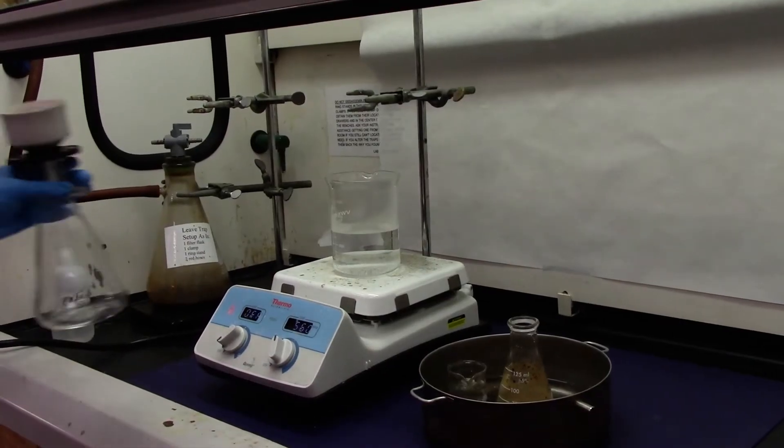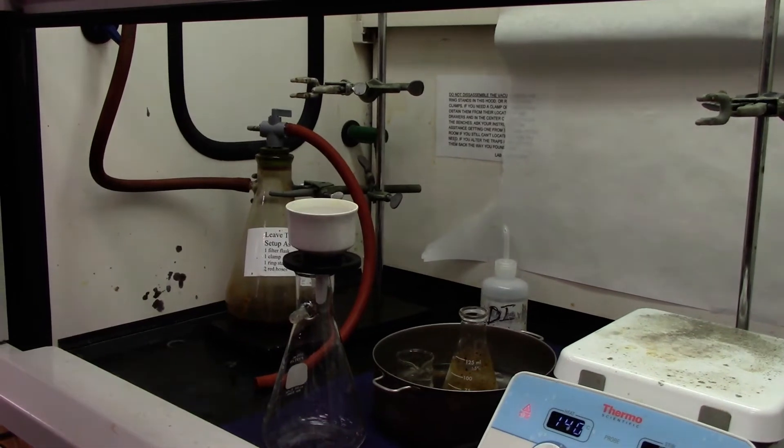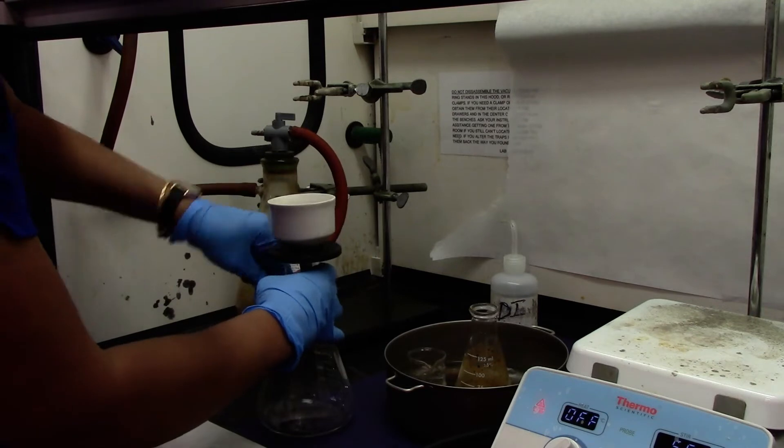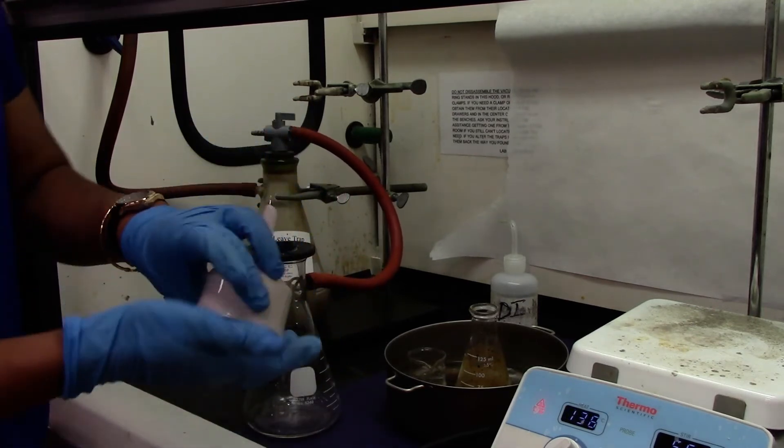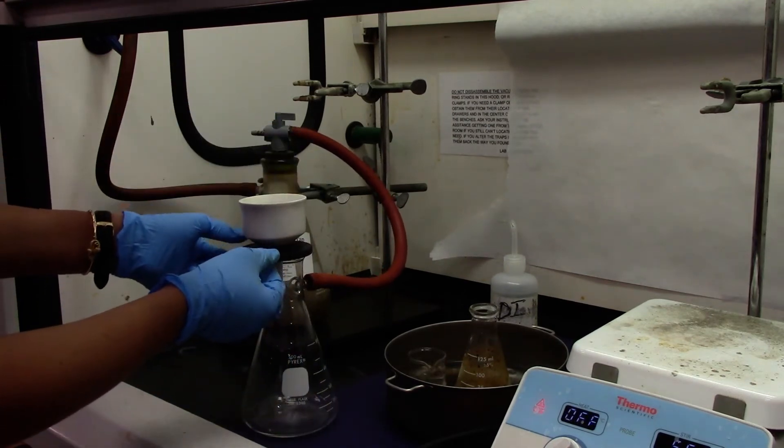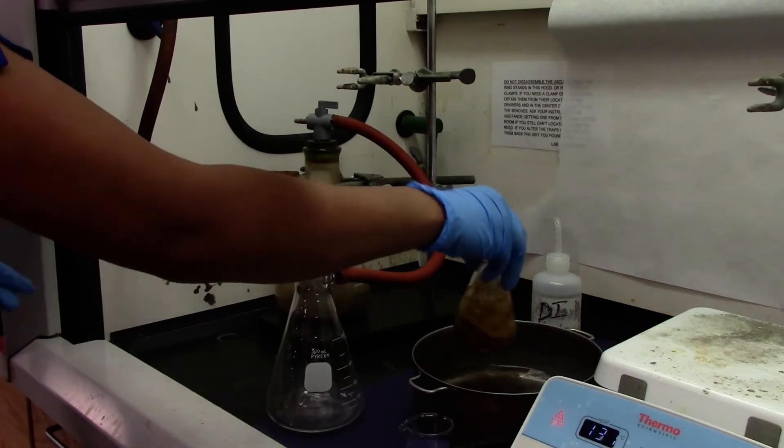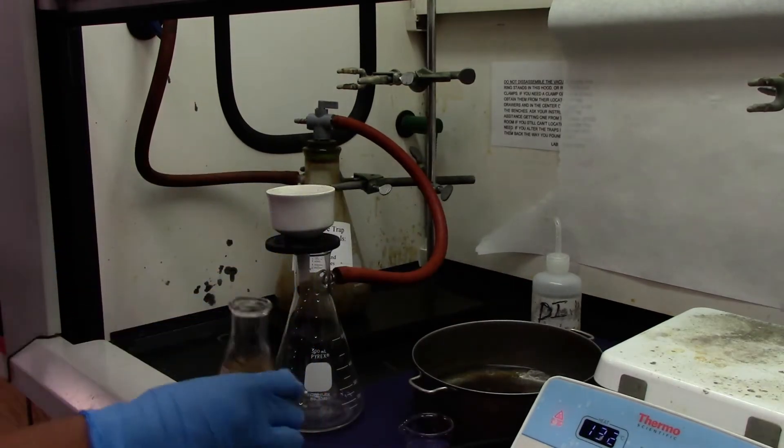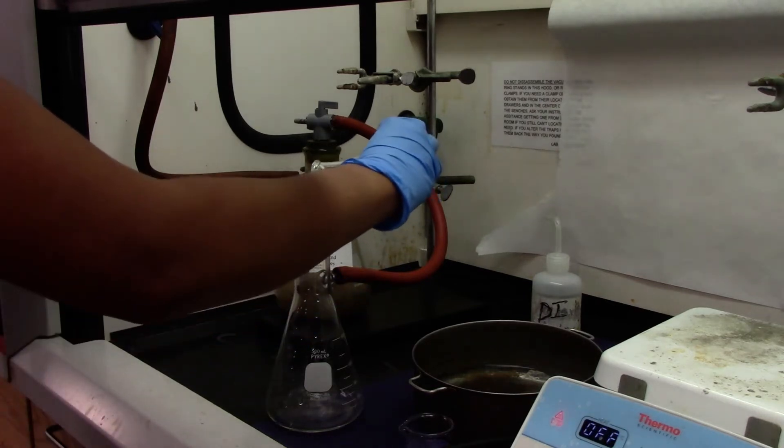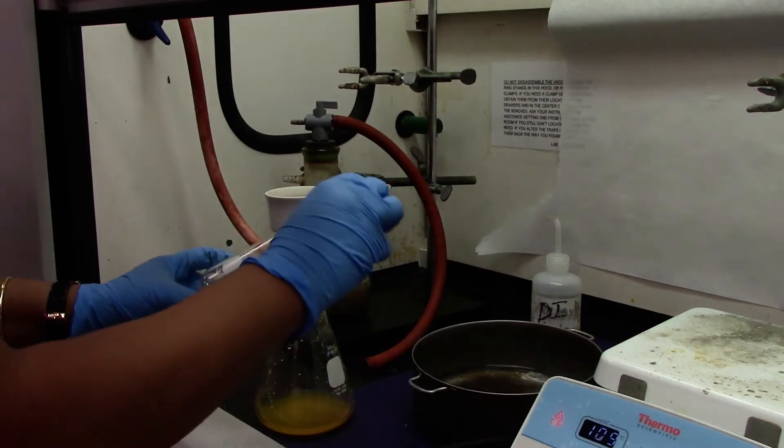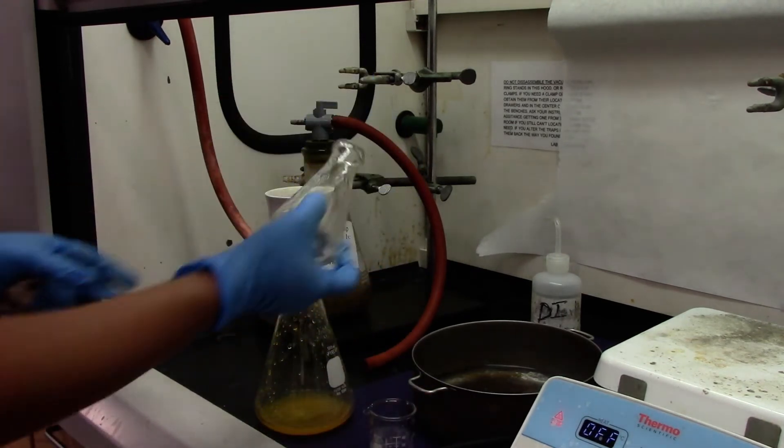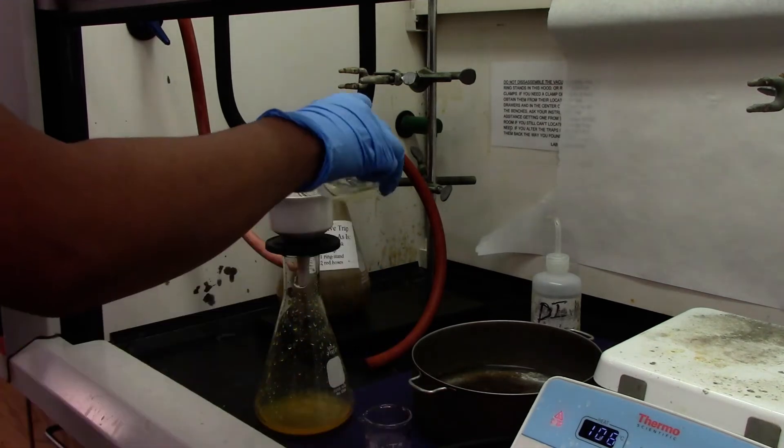Now we will set up the filtration. Connect the orange hose with the filtering flask. Use a filter paper on the funnel. Use a filtration adapter. Turn on the vacuum and transfer. Wash the Erlenmeyer flask with some ice cold water to get most of the product into the filtration funnel.